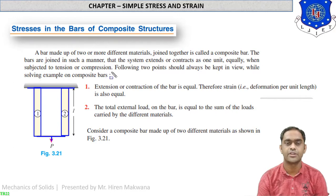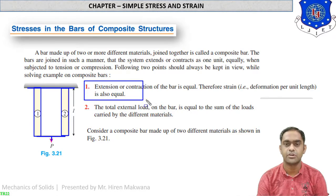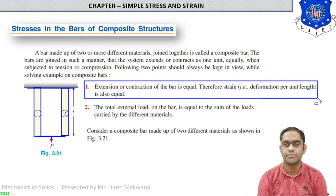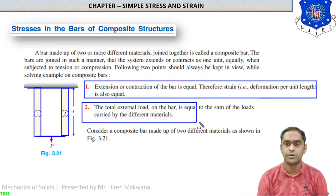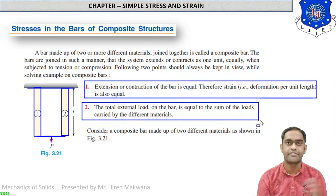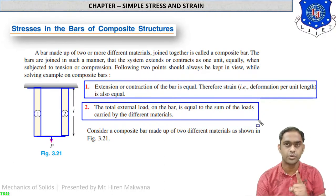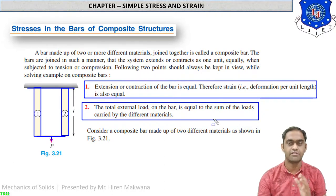When subjected to tension or compression, two important points should be kept in view while solving composite bar problems. First, the extension or contraction of the bar is equal, therefore strain (deformation per unit length) is also equal — so δL of both materials will remain the same. Second, the total external load on the bar equals the sum of the loads carried by different materials.